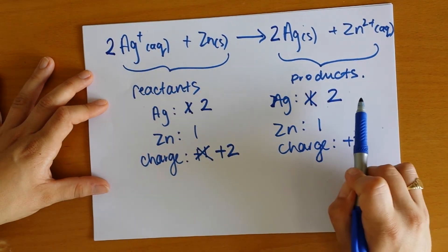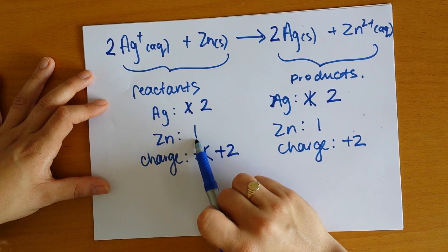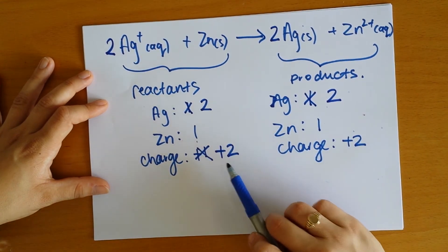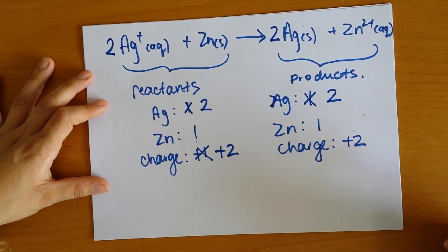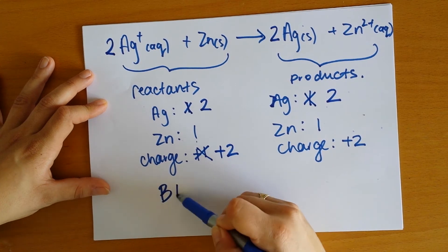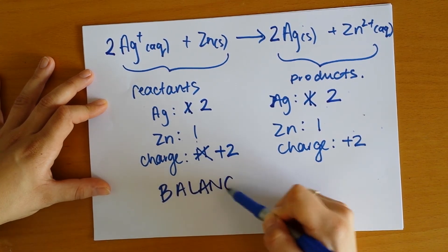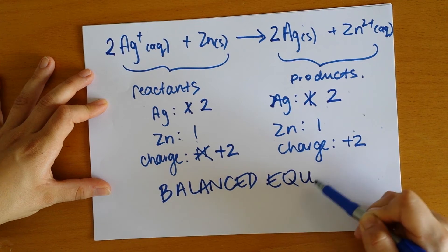Now we've got the same amount of silver on each side, the same amount of zinc on each side, and the charge balance we need. So we now have a balanced equation.